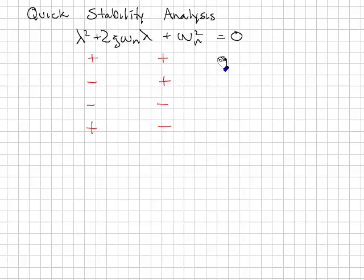In this first case, we can see that zeta is going to be greater than zero. Therefore, the system is stable.